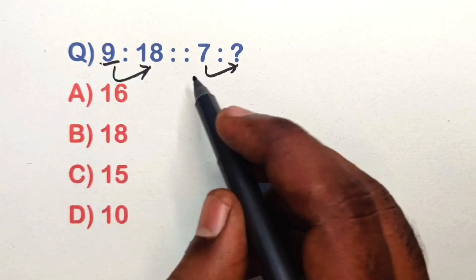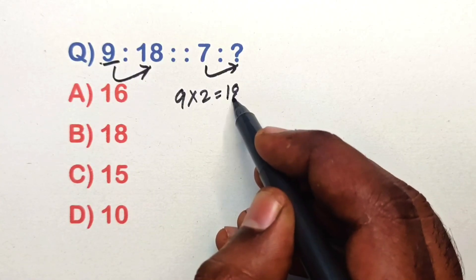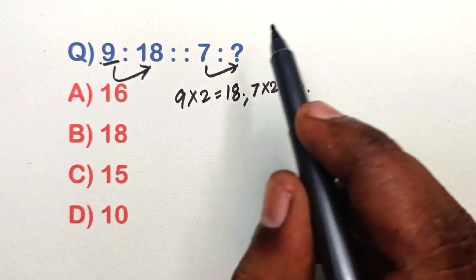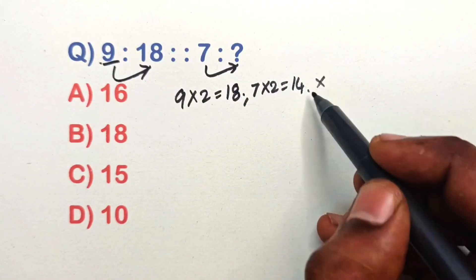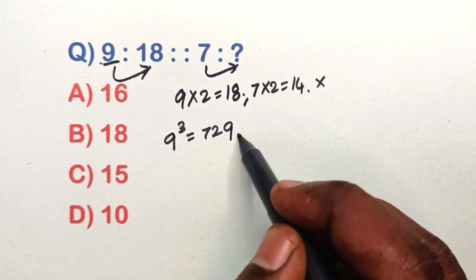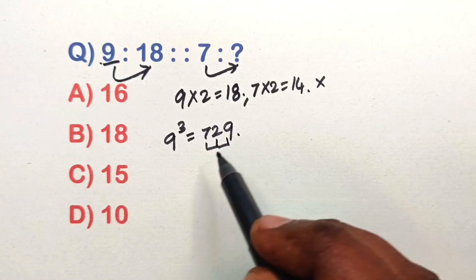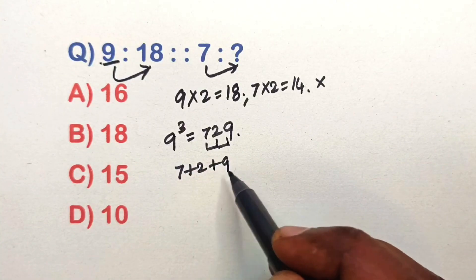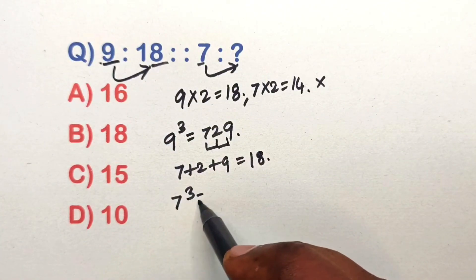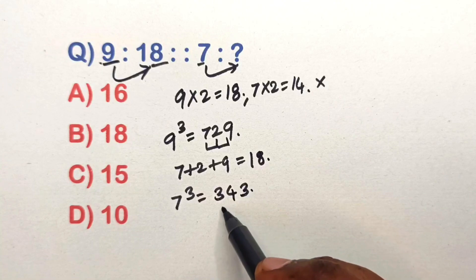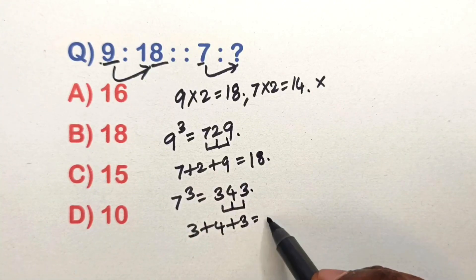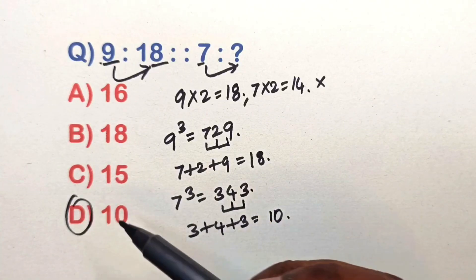Find the relation in this analogy question. Take 9: 9 cubed is 729 — add digits: 7 plus 2 plus 9 is 18. Take 7: 7 cubed is 343 — add digits: 3 plus 4 plus 3 is 10. So option D is the correct answer.